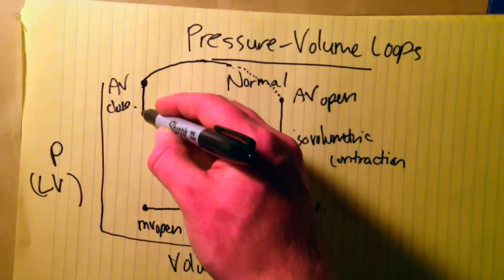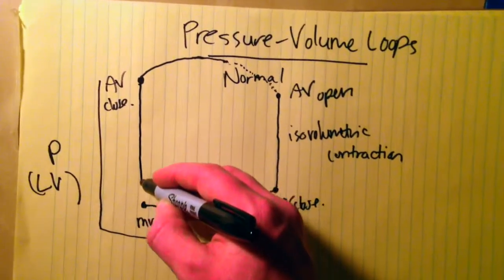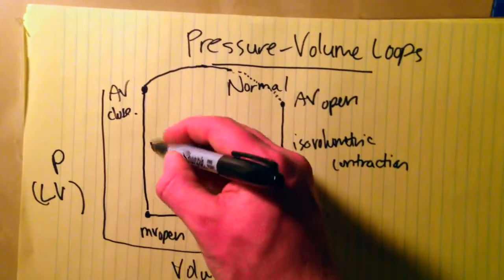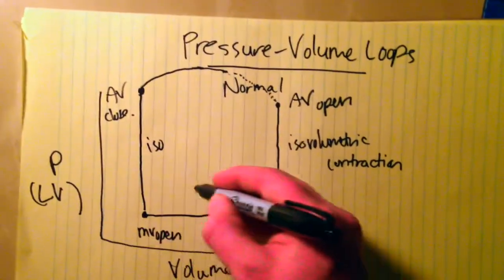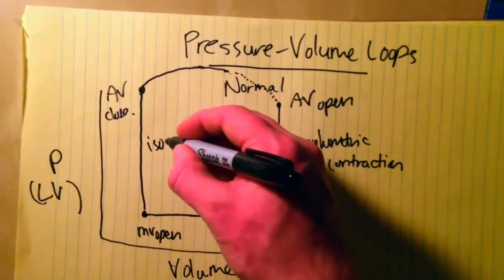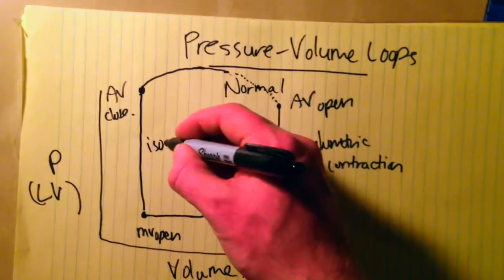So you get a period of isovolumetric relaxation - the volume is not changing, but the pressure is dropping significantly.